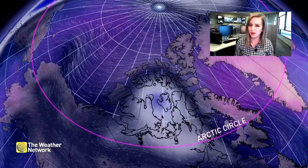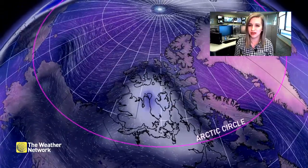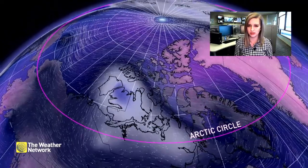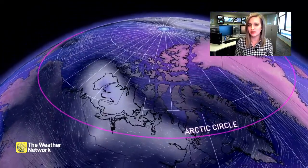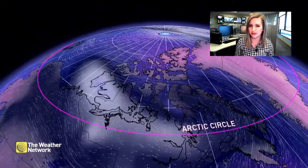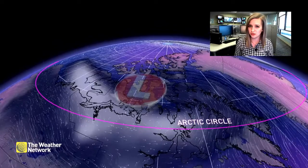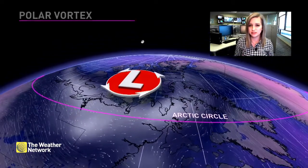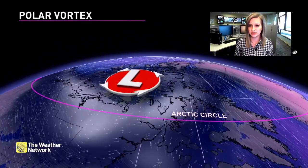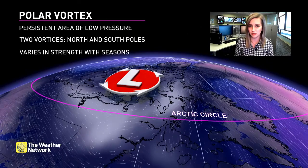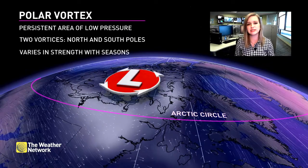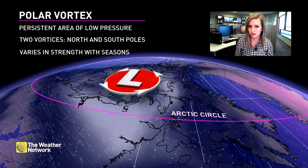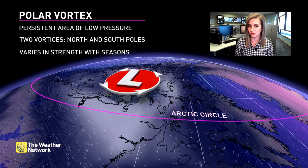The polar vortex has become quite a popular term over the last few years, ever since it brought significant cold across parts of North America during the winter of 2014. It may be a new addition to your vocabulary, but it's actually not something new at all. It's a persistent feature we see up towards the north and south poles — basically a swirling area of low pressure that contains some of the coldest temperatures on our planet.